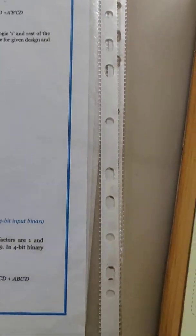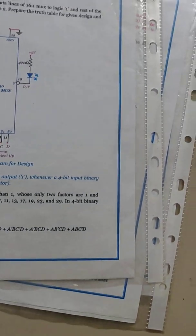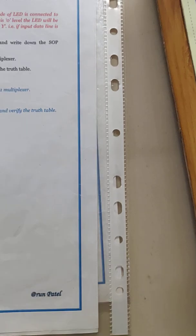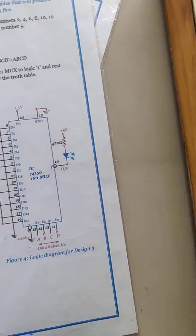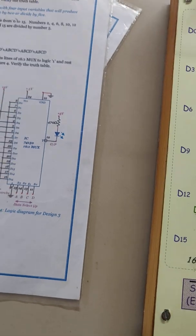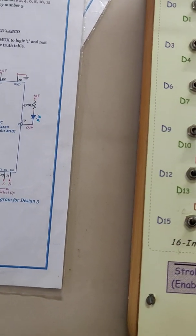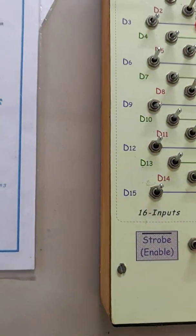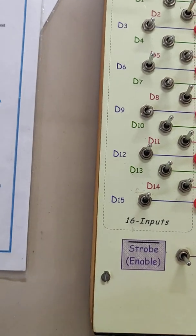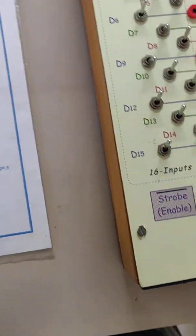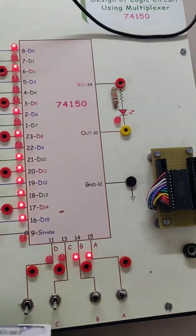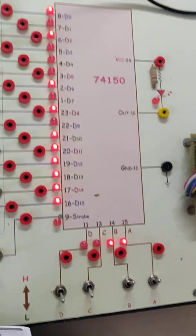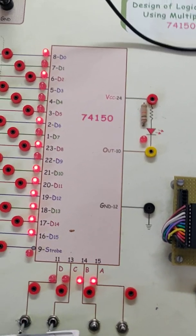So this way the multiplexer can implement a four-variable truth table. There are also design parts two and three with other sum-of-products equations. For each minterm required in the equation, the corresponding data input should be made low and all others kept high. When that particular minterm is selected by the control signals, the output goes high. This is how you study the multiplexer circuit using IC 74150 — it can work as a logic circuit design for any four-variable function. Thank you very much friends.